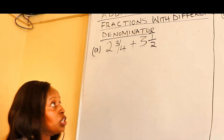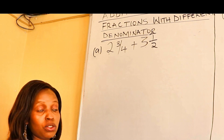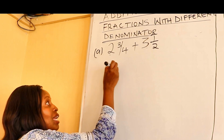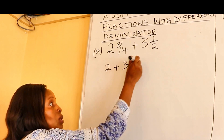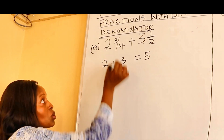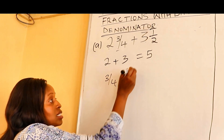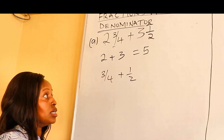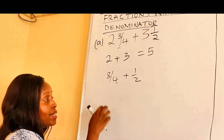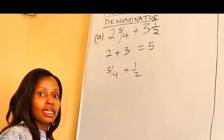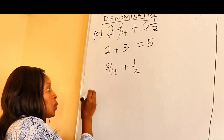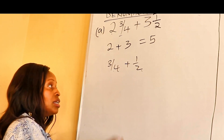Solving this question requires two approaches. For the first example I'll use the first approach. The first approach is whereby you put together the whole numbers: two plus three gives you five. Once you solve the whole numbers, you take the fraction part, which is three quarters plus a half. As you can see, these have different denominators, so we need to find the LCM.